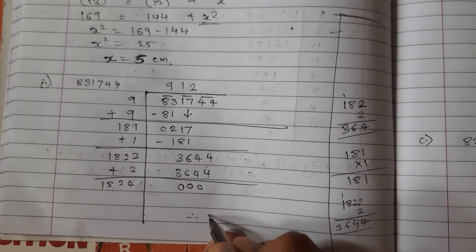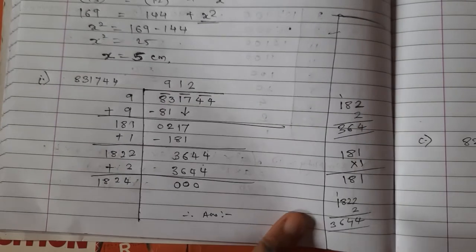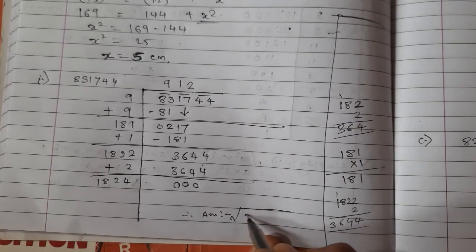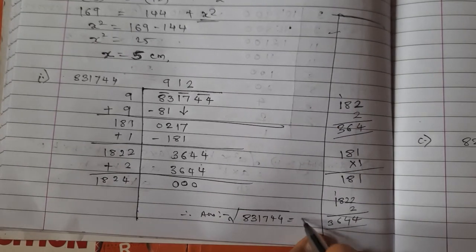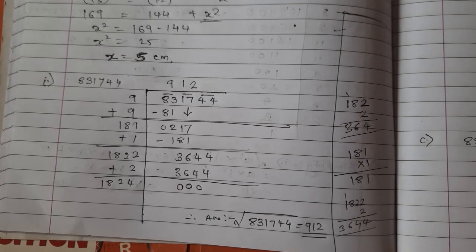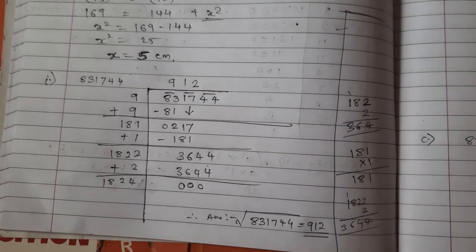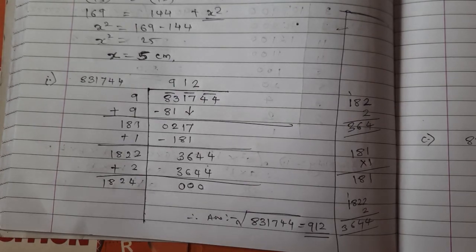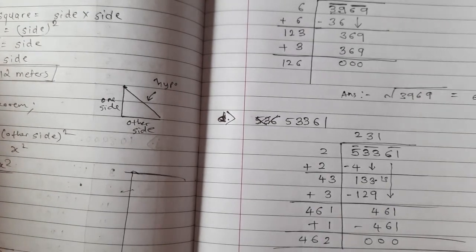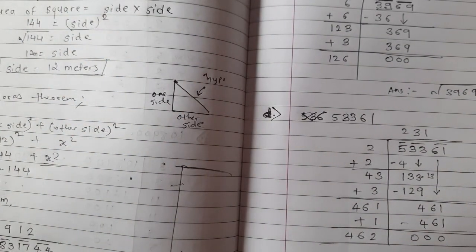So the square root of 831744 is 912. Like this you have to solve these sums for question number 1. Solve the leftover sums of question number 1, and then I will show you how to solve question number 2.